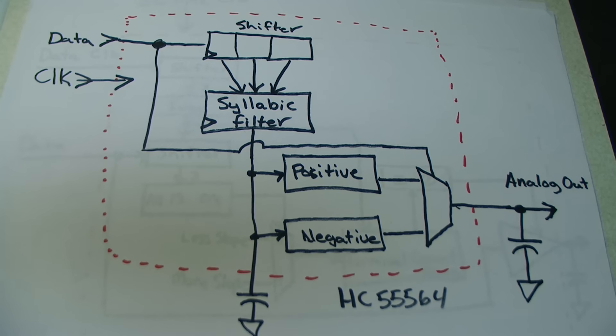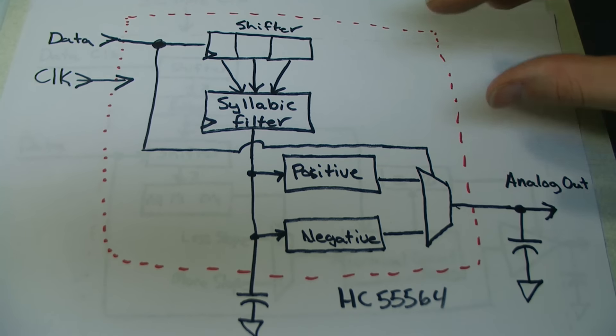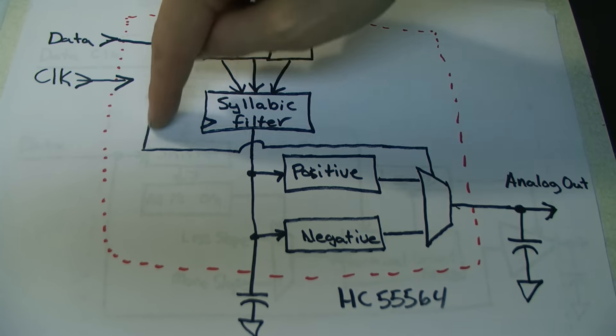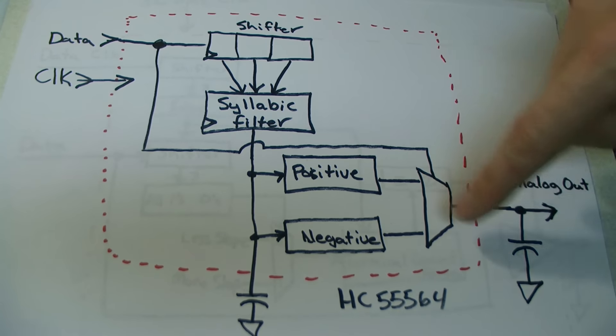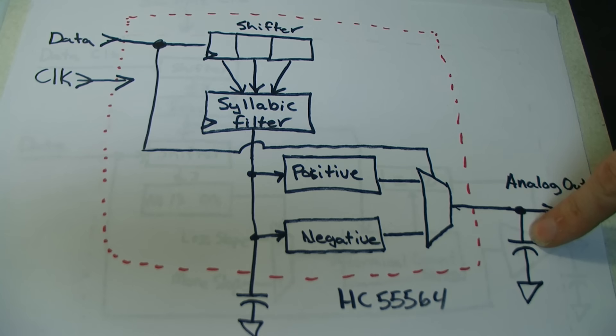This is a simplified block diagram of the HC-55564. I've removed all the encoding blocks so we can just concentrate on decoding. But I will go back to encoding at the end of the video because that's pretty fascinating too. So every clock, data is sampled into a shift register. That data also controls a switch which is removing or adding charge to an external capacitor that generates our analog output. If we receive three 0s in a row or three 1s in a row, a thing they call the syllabic filter changes the rate the charge is added or removed from this capacitor, increasing the slope angle. And that's it. There's not much to it.